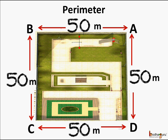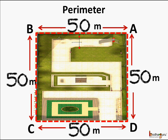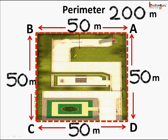Now, what is the perimeter? We know perimeter is the total boundary of a closed figure, which we showed here by the dotted red line. So the perimeter here becomes 50 meters plus 50 meters plus 50 meters plus 50 meters, which is equal to 200 meters.